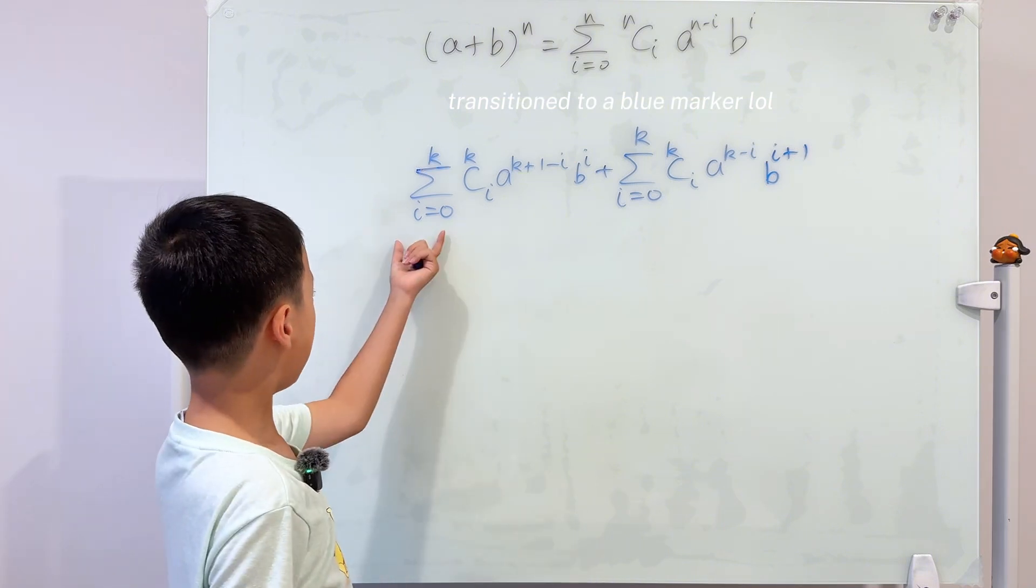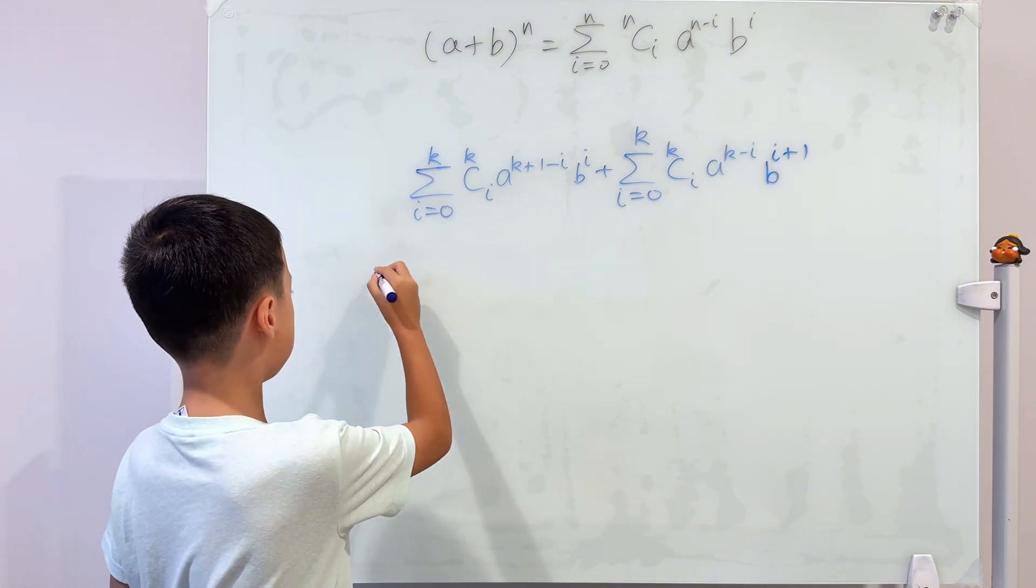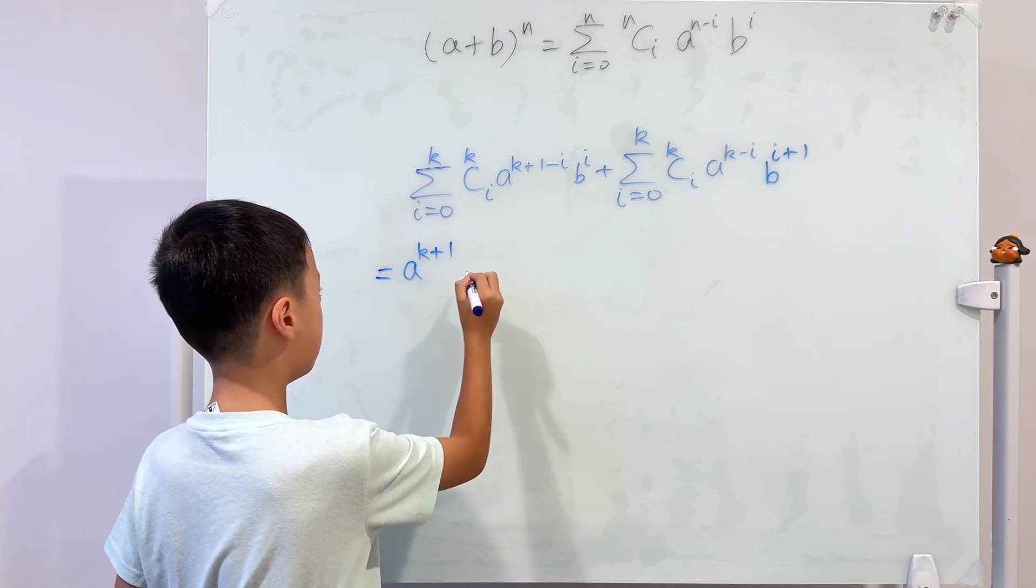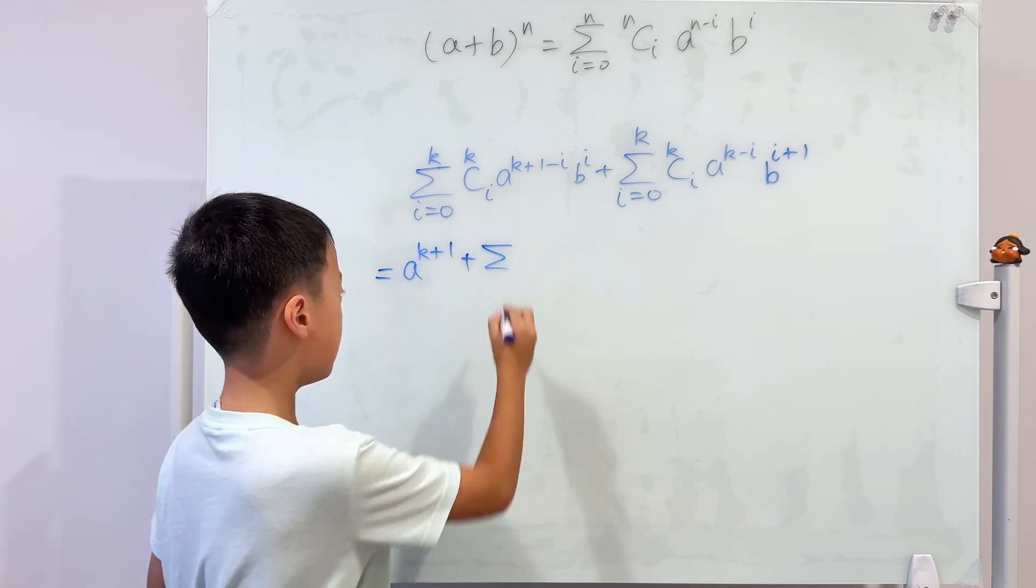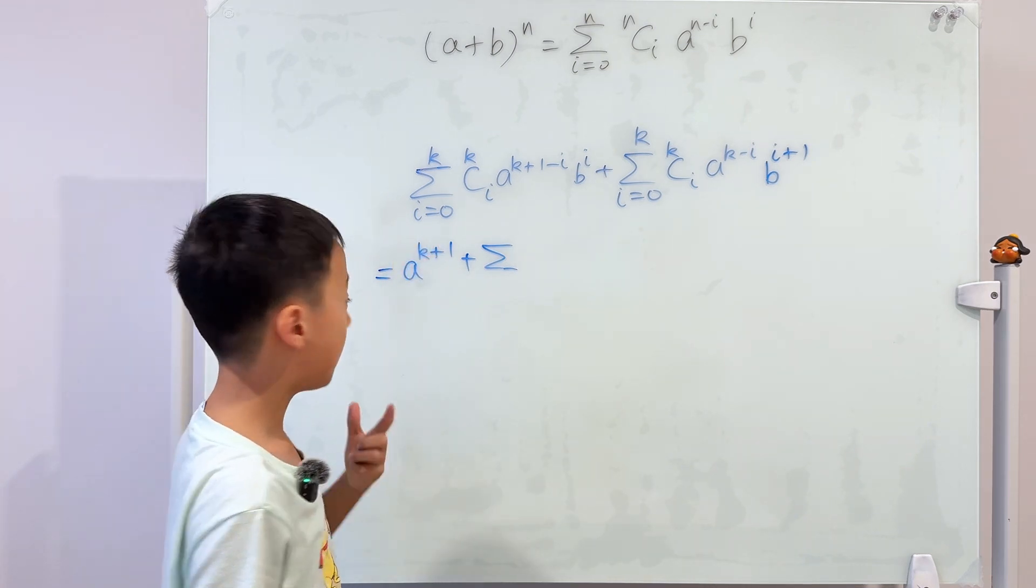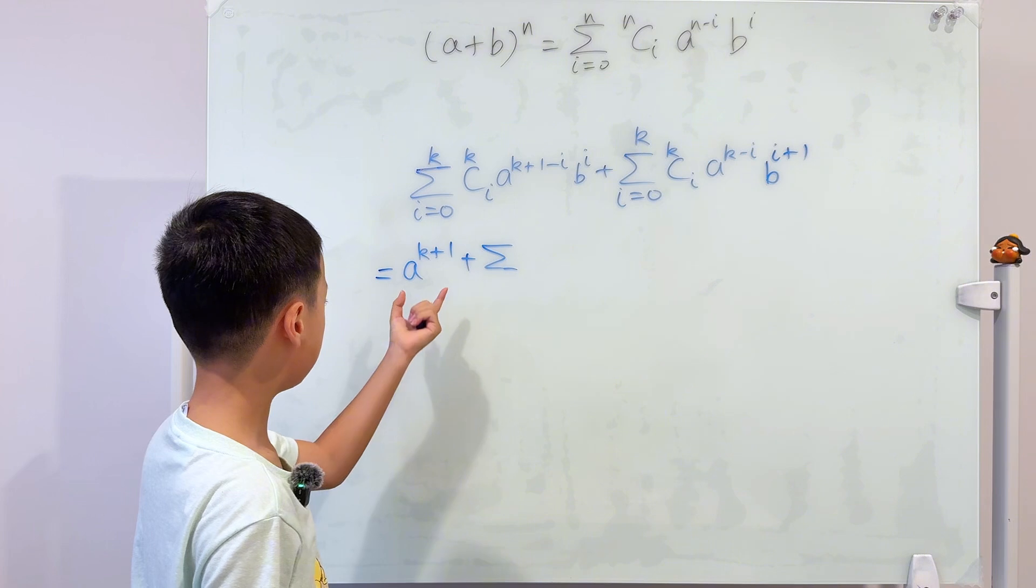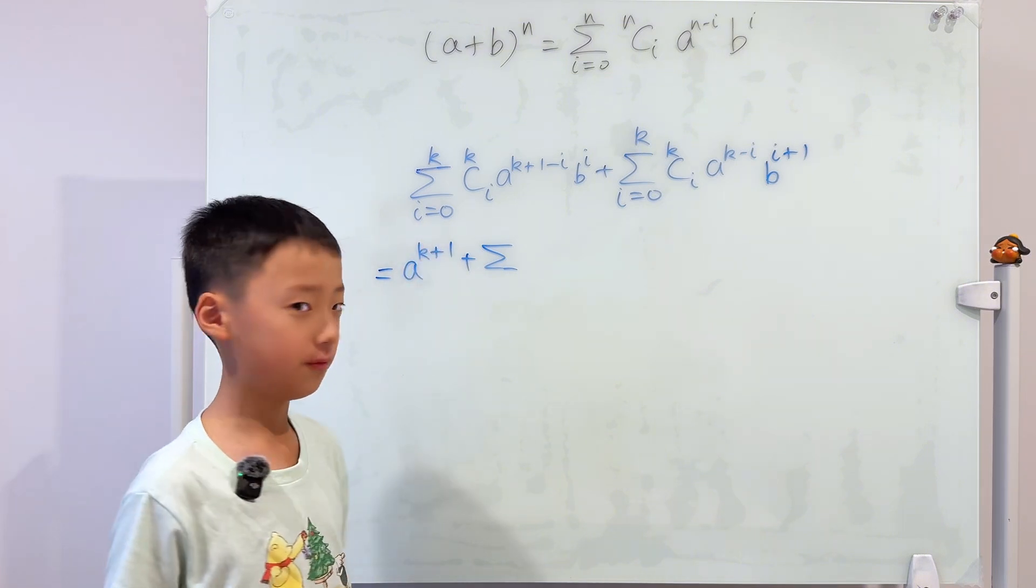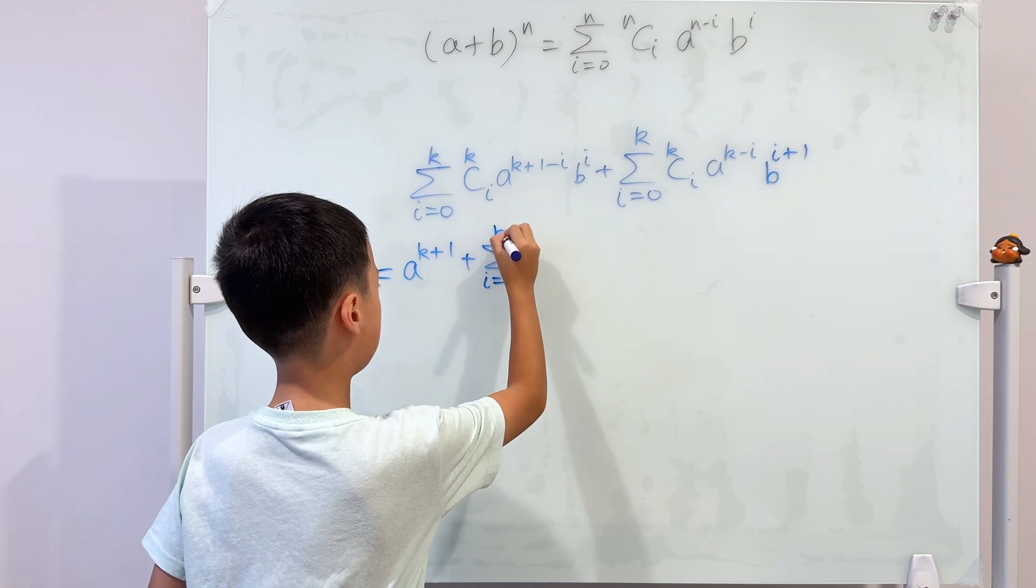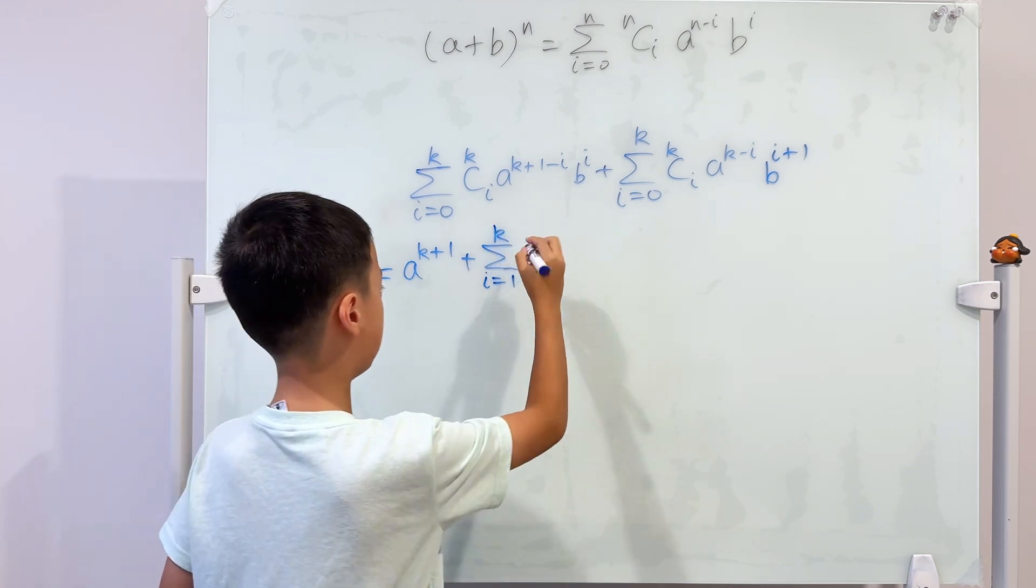We can take out the i equals zero term, so then it becomes a to the power of k plus one plus sigma. Now it's not from i equals zero to k, it's from i equals one to k because we took out the term for i equals zero.